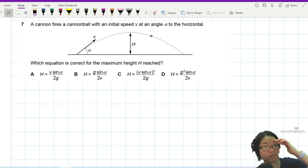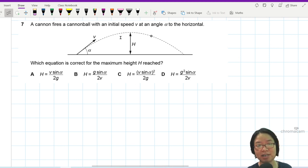Question seven. This is a projectile motion question. A cannon fires a cannonball with an initial speed V at an angle alpha to the horizontal.